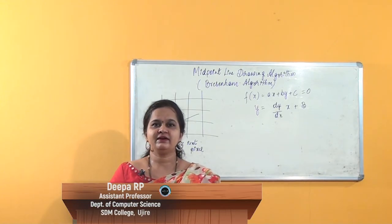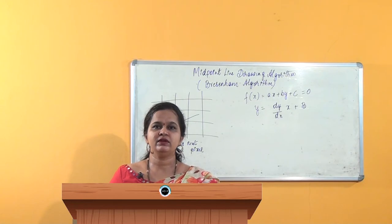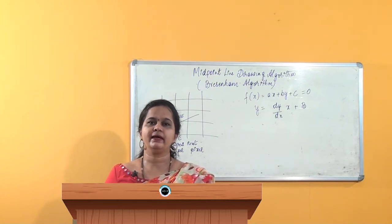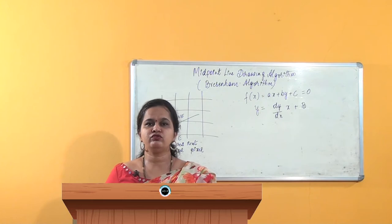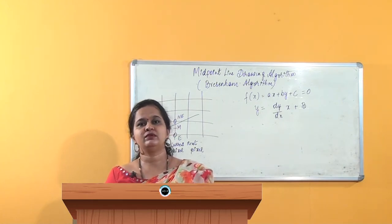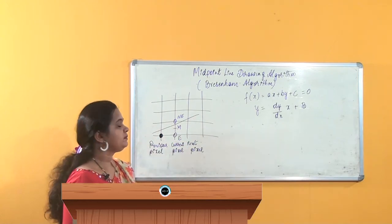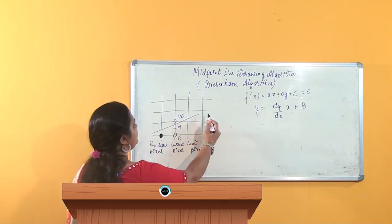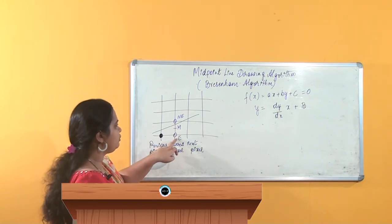Today we shall start with a new algorithm: the Midpoint Line Drawing Algorithm, also called Bresenham's algorithm, because he is the one who actually worked it out. We will also see the difference between the previous DDA algorithm and this midpoint line drawing algorithm. The DDA algorithm always requires the y value to be rounded off, and it is not so accurate or specific in selecting the correct pixel, as you can see in this diagram where I am drawing a line through a pixel grid.